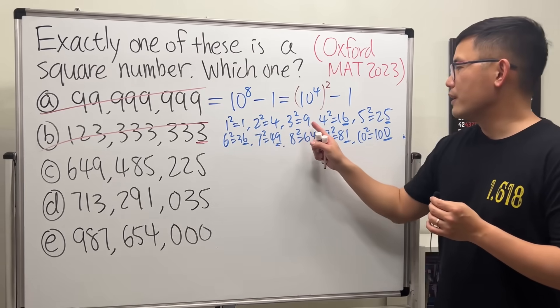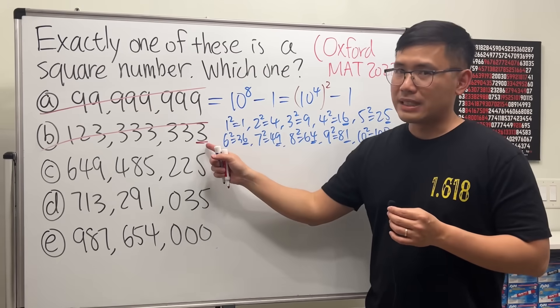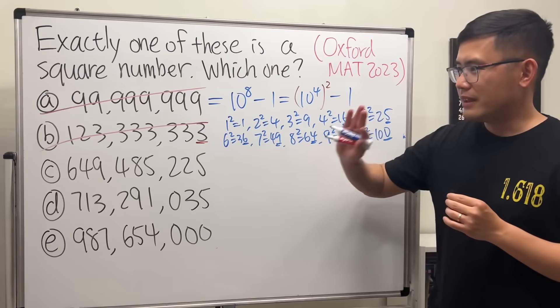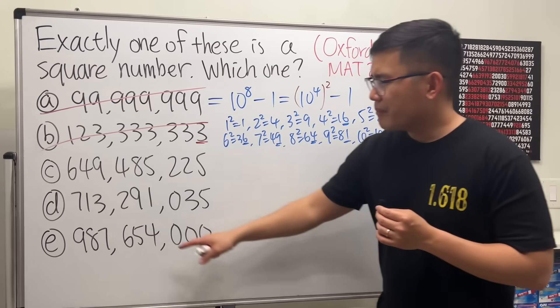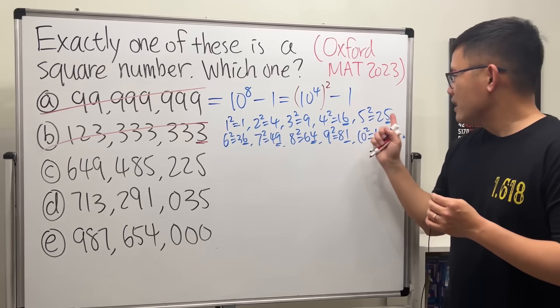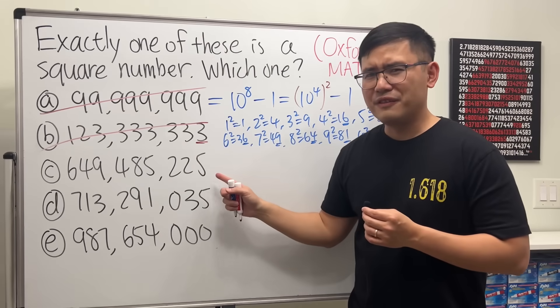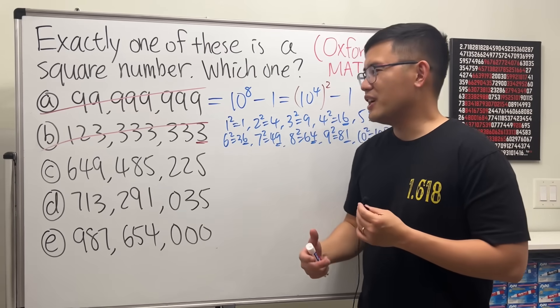So the only possible options are one, four, nine, six, five, and zero. It's not possible to have three, so not B. Now C, we have this and it ends with a five. Okay, more importantly though, this ends with 25, so it has a good chance. I will tell you that I'm not going to get rid of it yet.